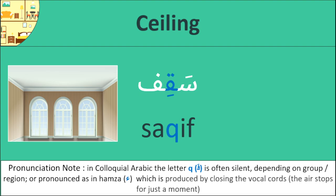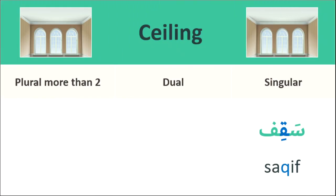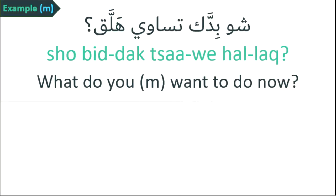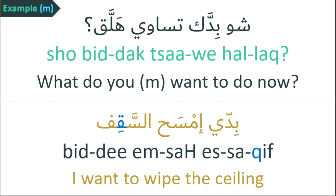Ceiling: 'sa'f'. Note: the letter qaf (Q) is silent. Singular form: 'sa'f'. Dual form: 'sa'fain'. Plural form: 'sa'ufe'. Example, talking to a man using a different way of asking: 'Shu biddak tsa'ufe halak?' The reply is: 'biddi imsah sa'f' — I want to wipe the ceiling.